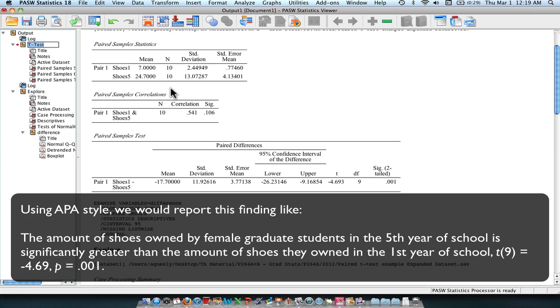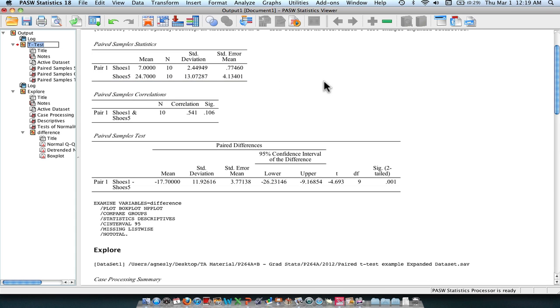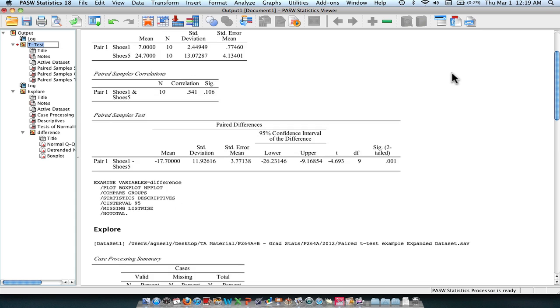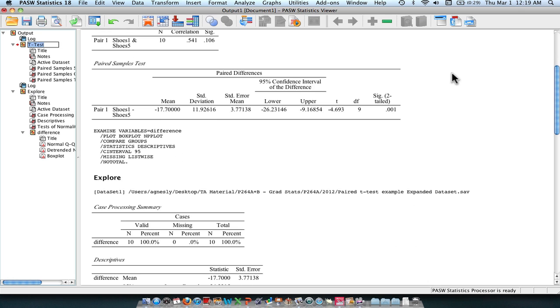We can go ahead and take a look at our mean values and we can tell that we have significantly more shoes in the fifth year of grad school than the first year of grad school. I hope that was helpful and I hope you have a fun time running paired t-tests.